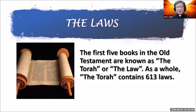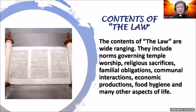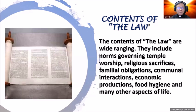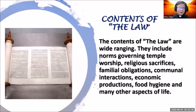In the first five books of the Old Testament, known as the Torah in Hebrew, or translated as 'the law,' these five books as a whole are known as the law, and they contain 613 laws. The contents of these five books are wide-ranging. They include norms governing temple worship, which was something very important for the ancient Israelites, and the various kinds of religious sacrifices and offerings they were supposed to make.